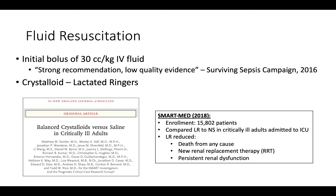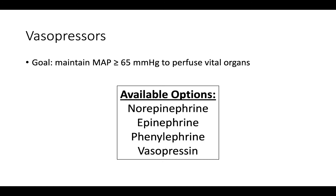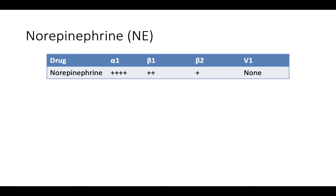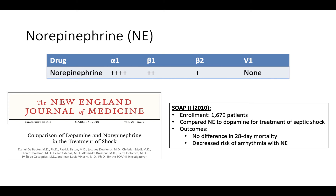After administering broad-spectrum antibiotics and a 30 cc per kilogram bolus of lactated Ringer's, if the patient remains hypotensive with an elevated lactate, we add vasopressors. Our goal is to maintain a mean arterial pressure greater than or equal to 65 mmHg to maintain perfusion to the vital organs. The main vasopressors available in the ICU are norepinephrine, epinephrine, phenylephrine, and vasopressin. Our first vasopressor is typically norepinephrine — a predominant alpha-1 agonist with some beta-agonism. The SOAP2 trial in 2010 compared norepinephrine to dopamine for treatment of septic shock, finding no difference in 28-day mortality but an increased risk of arrhythmias with dopamine. Therefore, norepinephrine became the first vasopressor of choice.